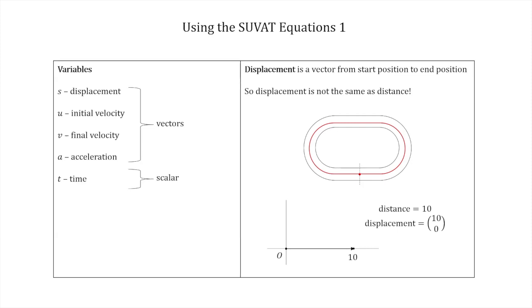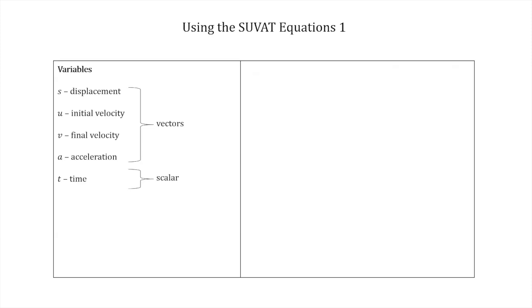The reason it's a vector becomes clear if a second person moves in the opposite direction from the origin along the negative x-axis, also traveling 10 units. Their distance is still 10, but their displacement is minus 10, or as a column vector, (−10, 0), because they moved in the negative direction. The same applies to velocity and acceleration — moving in the negative direction gives a negative value. This is why S, U, V, and A are always vectors, while time is a scalar because you can't move backwards in time.